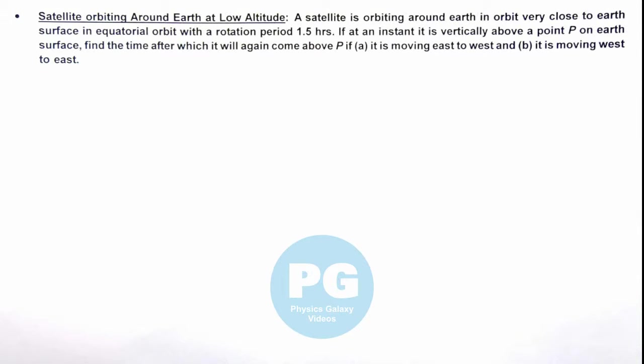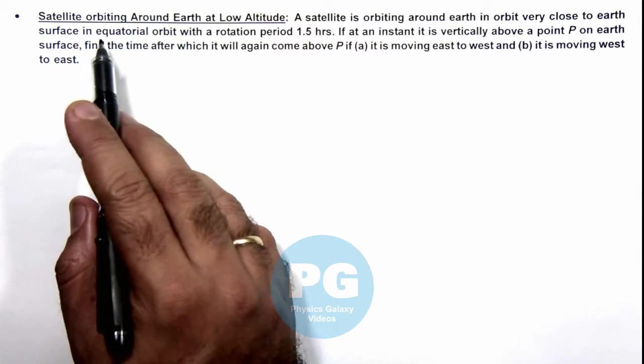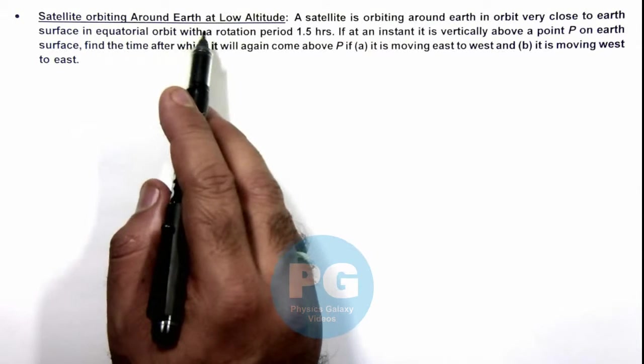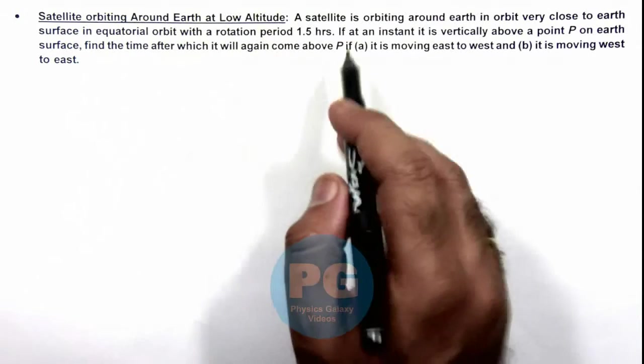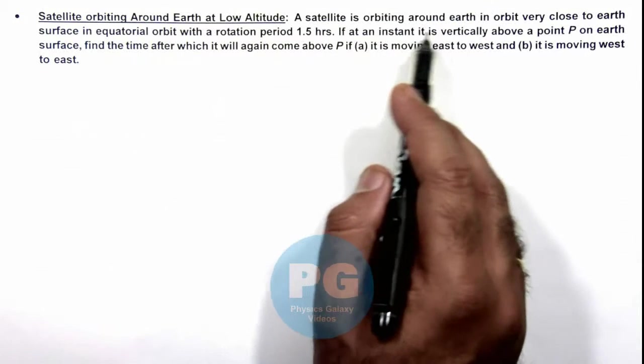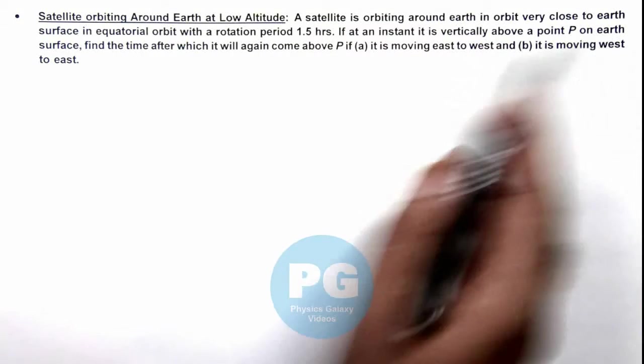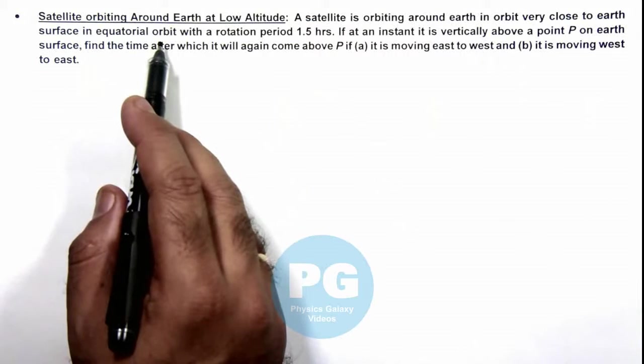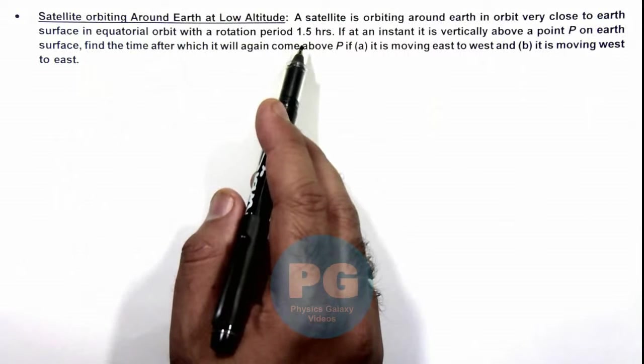In this illustration we'll discuss a satellite orbiting around Earth at low altitude. Here we are given that a satellite is orbiting around Earth in orbit very close to Earth's surface in equatorial orbit with a rotation period of 1.5 hours.